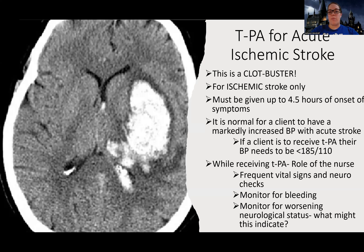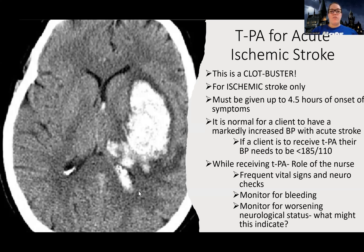We cannot use TPA in a hemorrhagic stroke. There are certain parameters around when TPA can be used. Research has shown it's a helpful medication but only if given within a short window of time after symptoms started. This CT image shows what a hemorrhagic stroke looks like — a large white space in the brain indicating bleeding. If a patient had this CT result, they cannot get TPA.